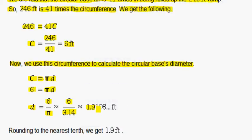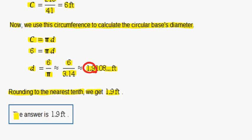So, we get 1.910 continuing. Rounding to the nearest tenth, we get 1.9 feet. The nearest tenth would be 9, and the number to the right of it is less than 5, so we stay at 1.9. The answer is 1.9 feet.